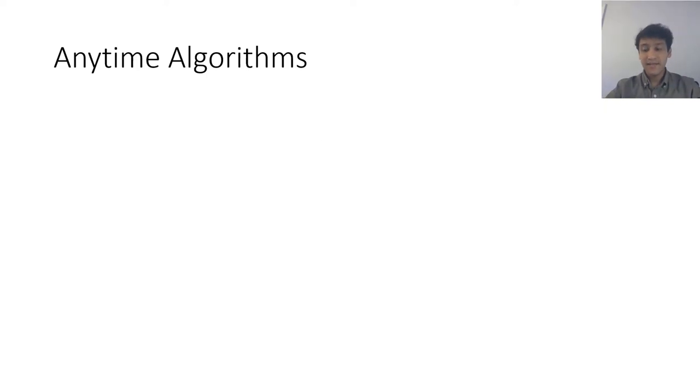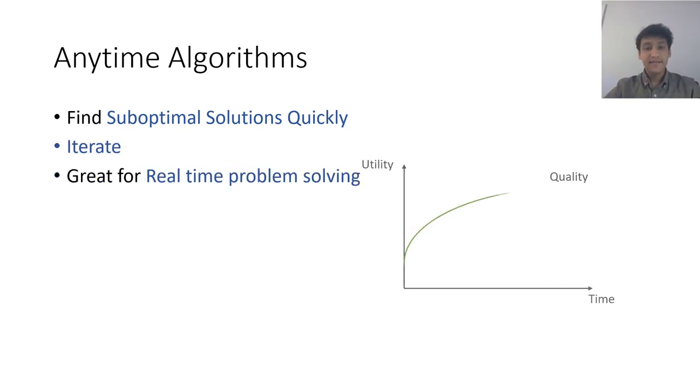Anytime Algorithms are a class of algorithms that find a suboptimal solution quickly and then iterate upon them. That makes them great for solving problems in real time because depending on the time available they can be interrupted at a suitable time to act on the latest solution.